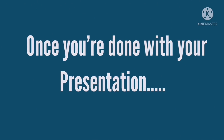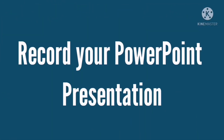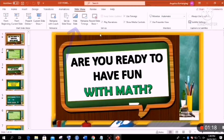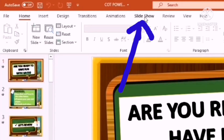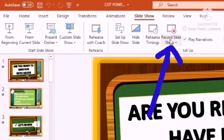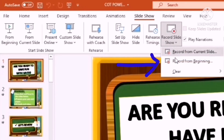Once you're done with your presentation, to make it into a video, we have to record your PowerPoint presentation. To record it, click the Slideshow button. Let's zoom in. Then click 'Record Slide Show' — the one with the arrow — and then select 'Record from Beginning.'